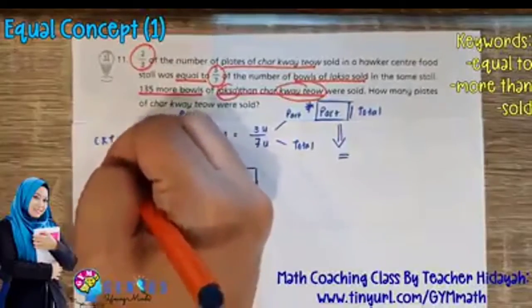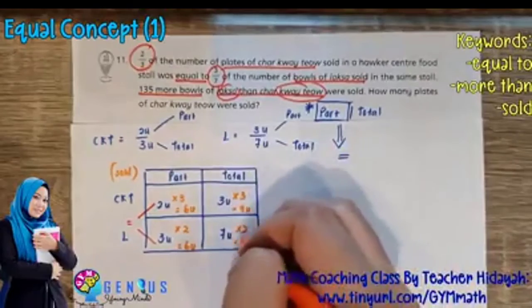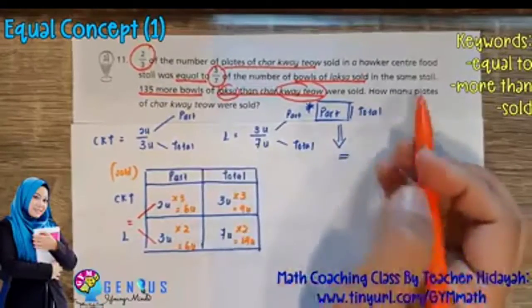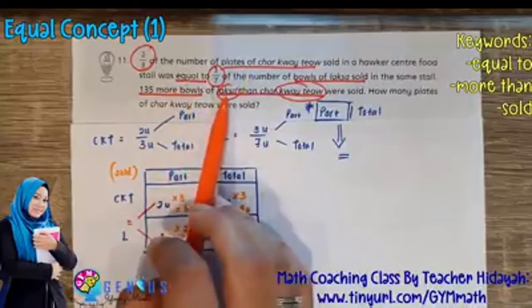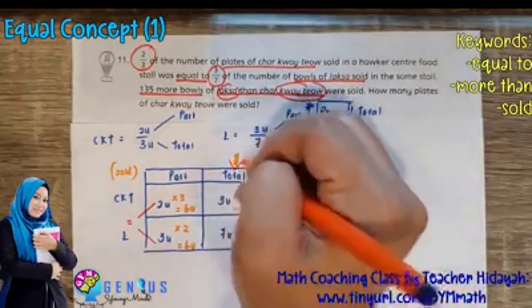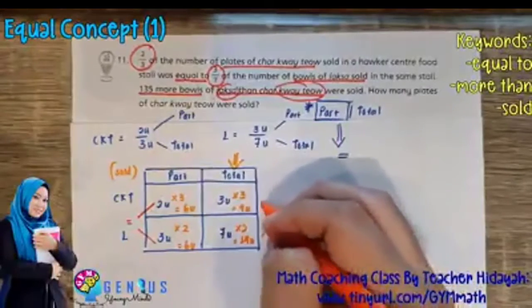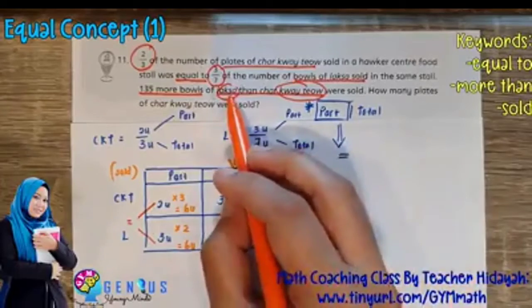Okay, so this is referring to those that are sold. So this will be 9 units and this will be 14 units. And if you go back to the question, we are comparing the total number of Laksa and the Cha Kuei Tiao. So the total, we look at the total number of Laksa and Cha Kuei Tiao. So if you see, the Laksa is more than the Cha Kuei Tiao.